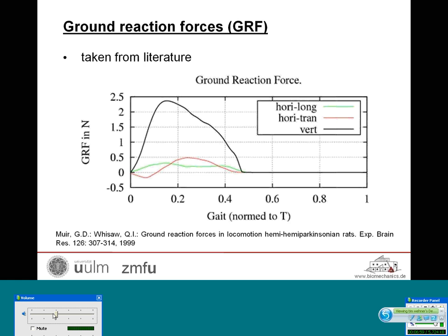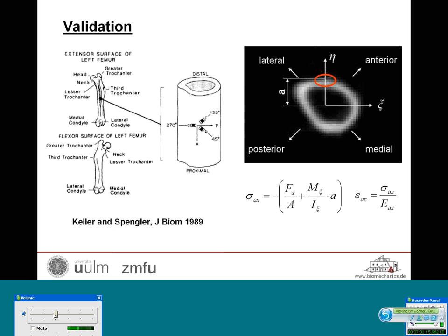The ground reaction forces were not measured directly during gait. They were taken from the literature — from the publication of Muir and Whishaw presented in 1999 — and adjusted to our rat's body weight of approximately 325 grams. The ground reaction force vector was applied to the metatarsals from the beginning to the middle of the stance phase, and then transferred to the phalanges thereafter, up to the end of the stance phase, according to Clark and colleagues presented in 1988.